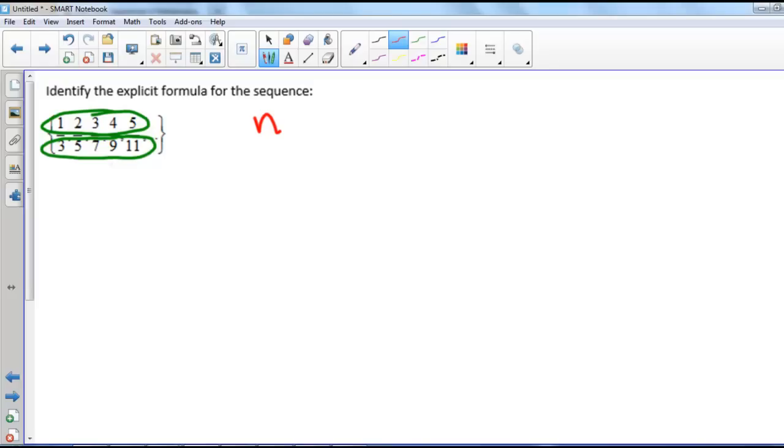Now on the bottom, this is a little trickier. So we have the difference between each of these is just 2. So that means that we have 2 times n and then how do we get 3? So if n is 1, 2 times 1, we need to add 1. So if we check it, if we have for our second term, 2 times 2 plus 1 is 5.